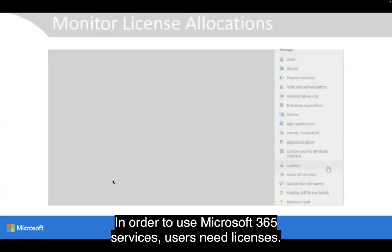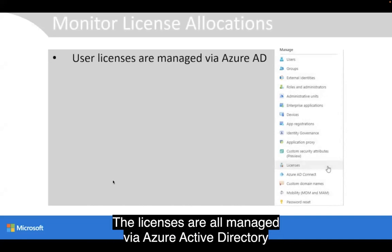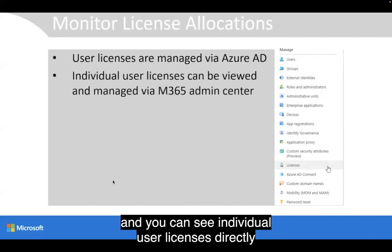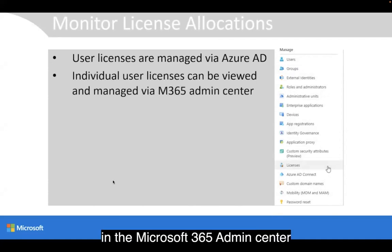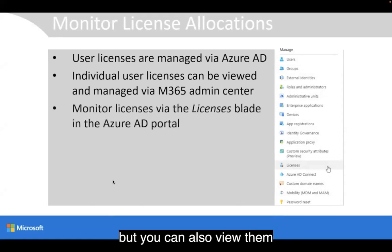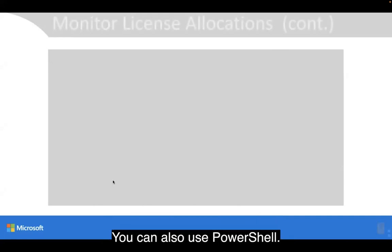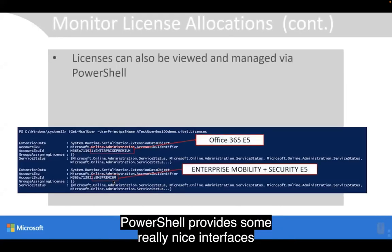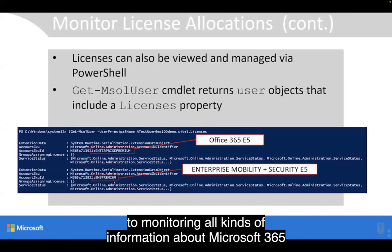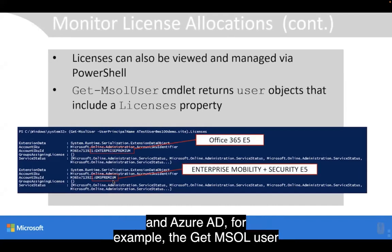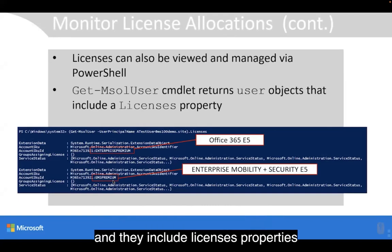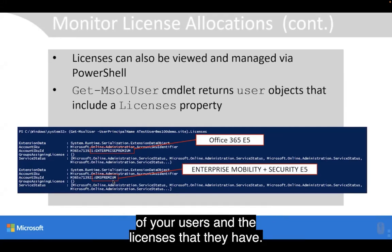In order to use Microsoft 365 services, users need licenses. The licenses are all managed via Azure Active Directory. You can see individual user licenses directly in the Microsoft 365 Admin Center, but you can also view them via the licenses blade in the Azure AD portal. You can also use PowerShell, which provides really nice interfaces for monitoring all kinds of information about Microsoft 365 and Azure AD. For example, the Get-MSOLUser cmdlet returns user objects that include license properties, allowing you to see all your users and the licenses they have.